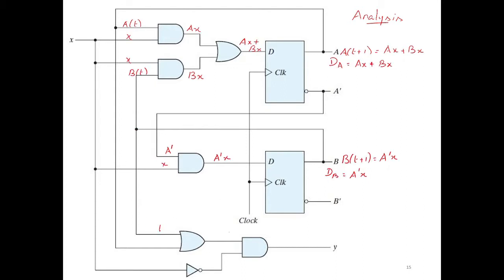For the output equation: the line from b and the line from a feed into an OR gate, giving a + b. This is then combined with x̄, so the output y = (a + b)·x̄.